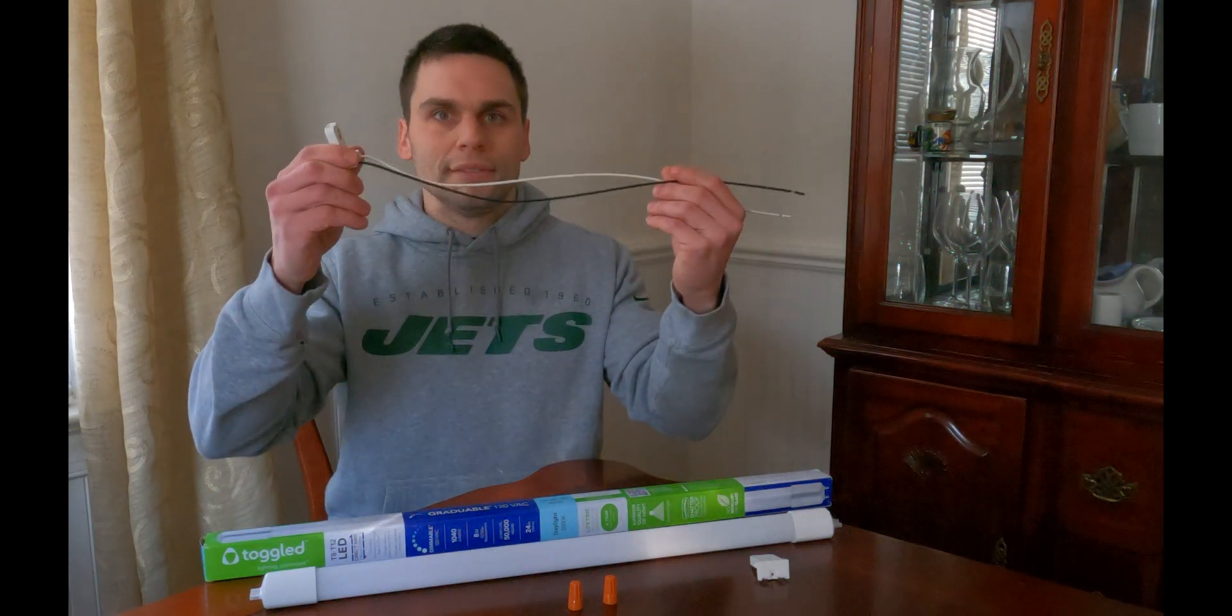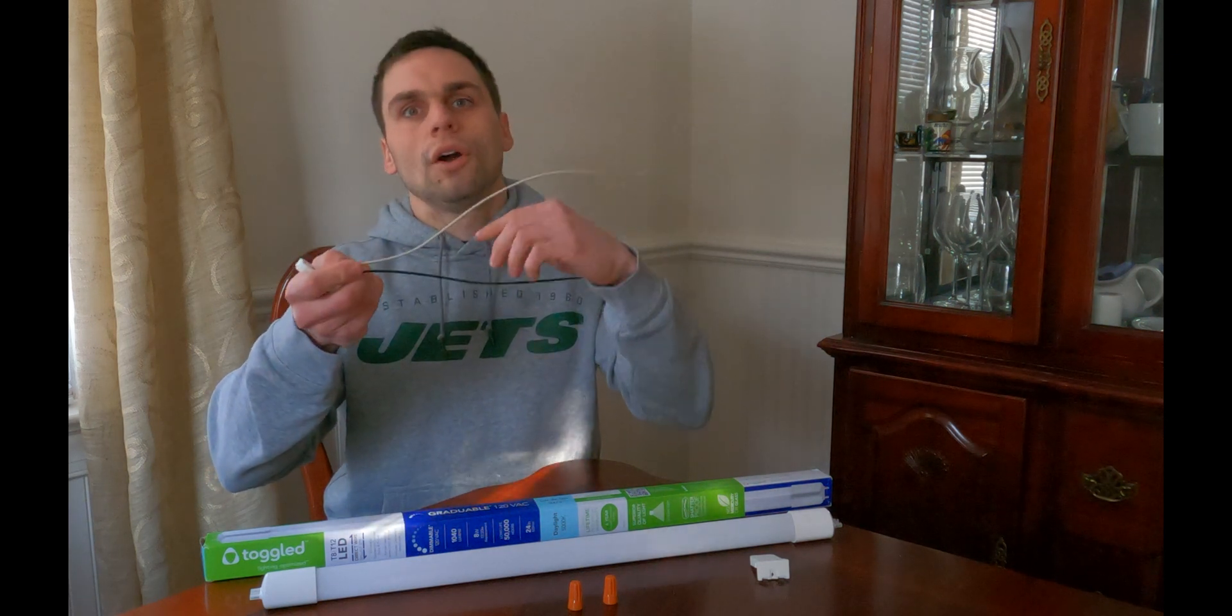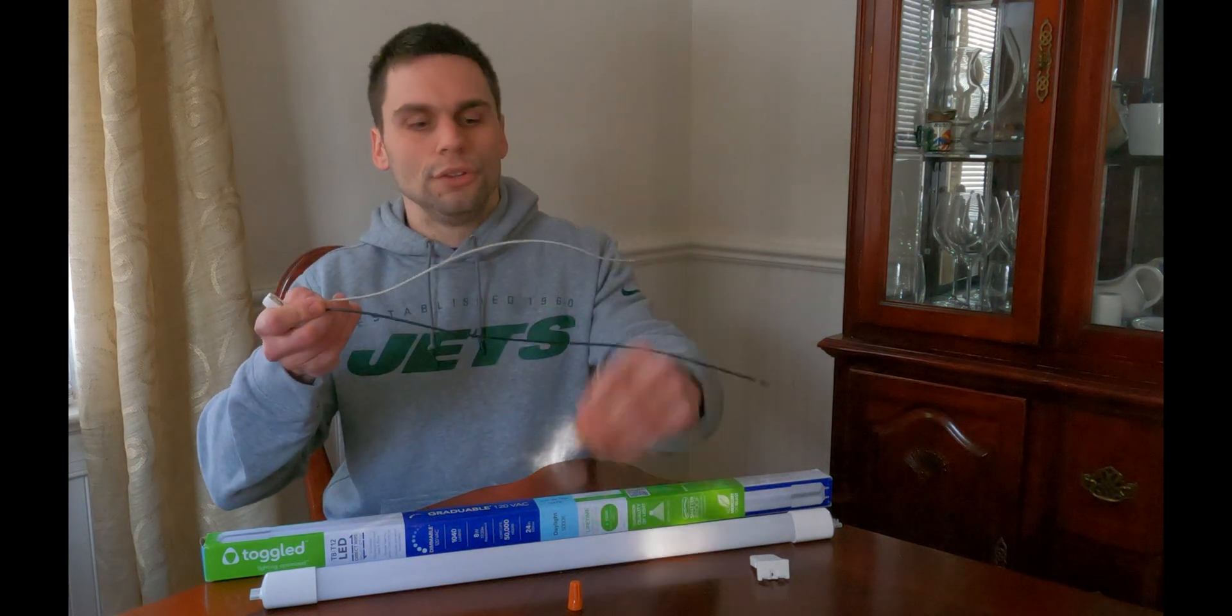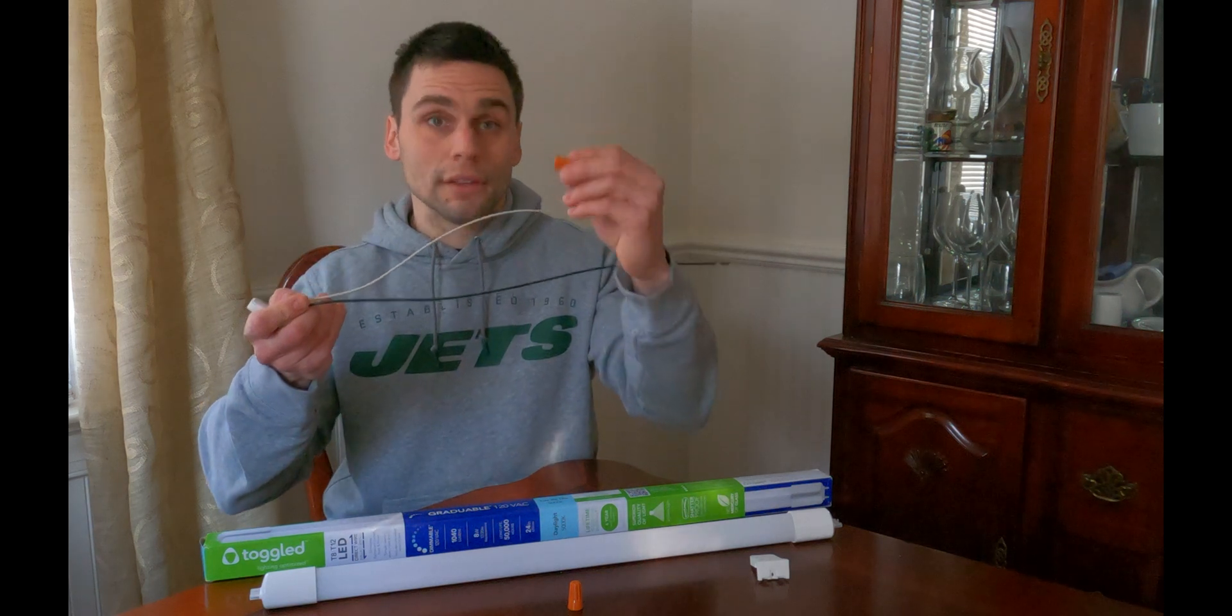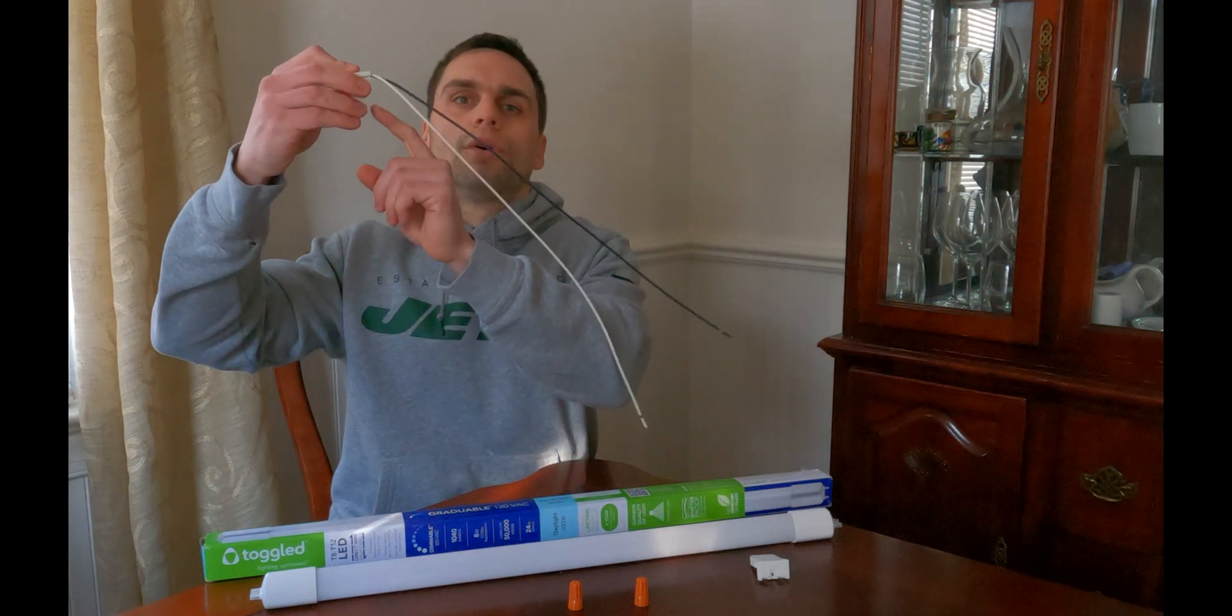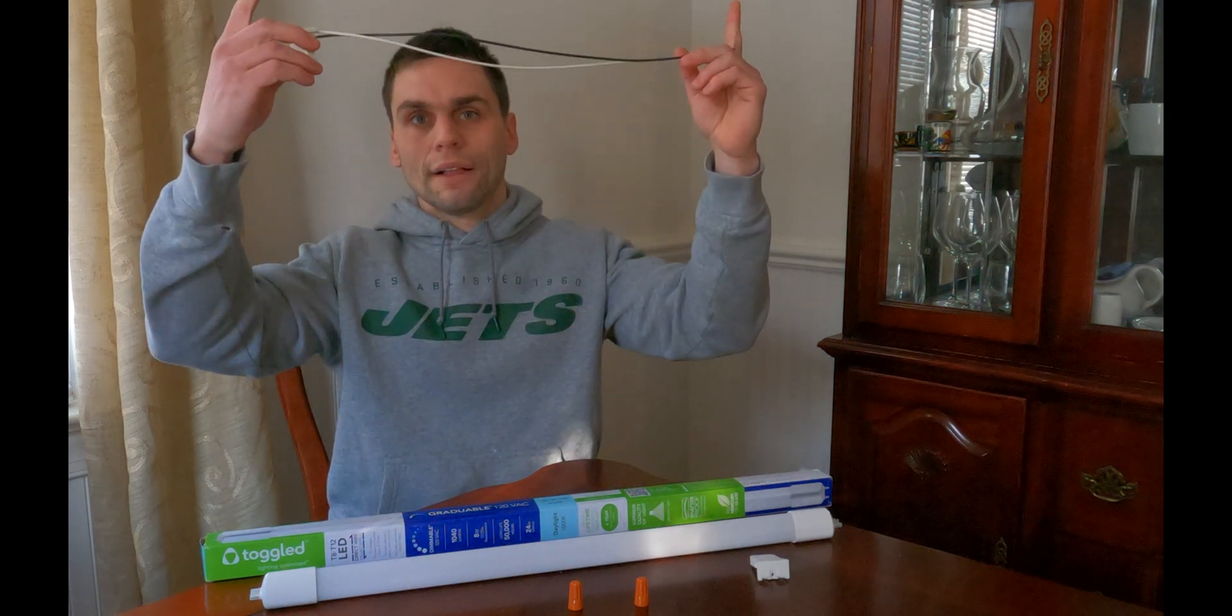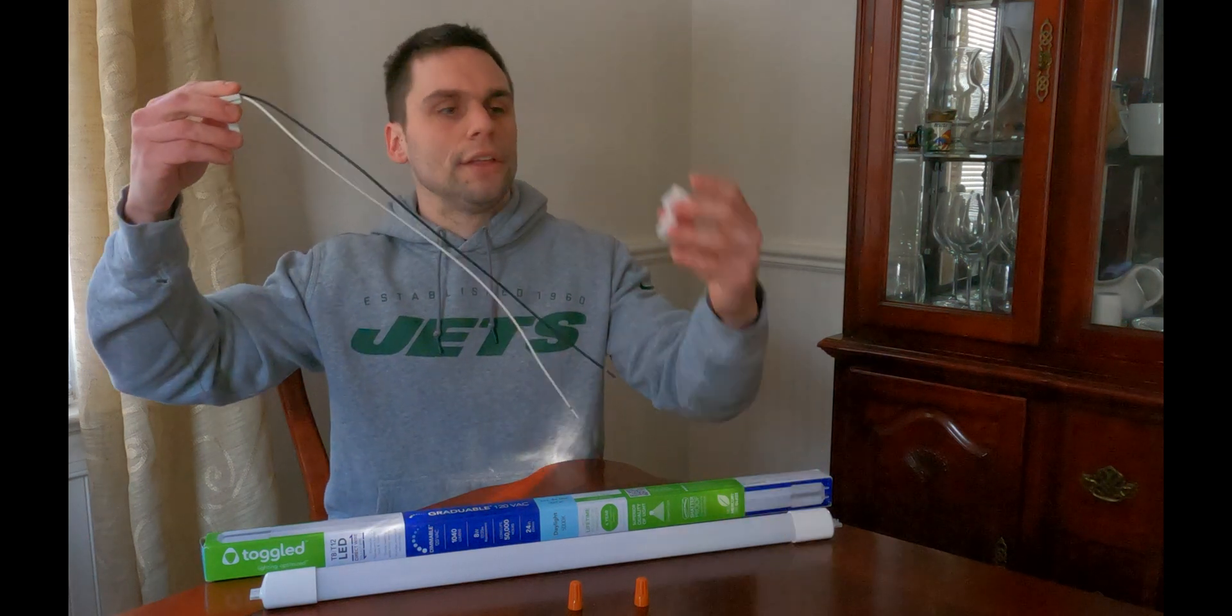In essence, what it is - and again this is not an install video, watch that video - is you get this piece with the kit, and you're essentially tying black to black, white to white, utilizing these caps that are provided, and that connects to the one side of your bulb, whichever side you want to connect to it in your ballast, in your lighting system.